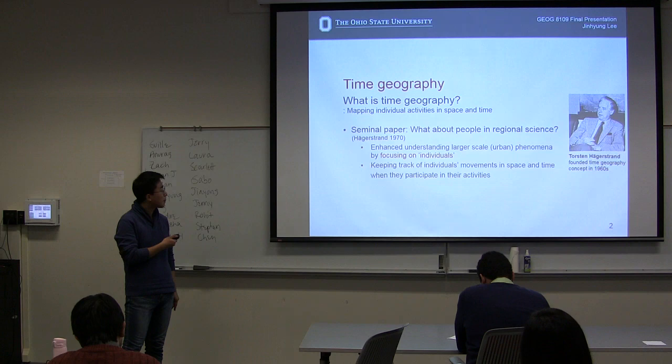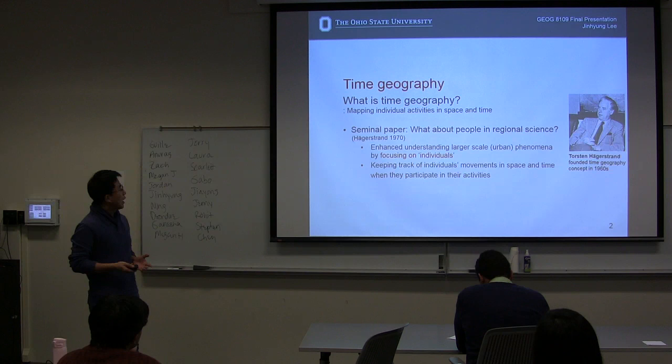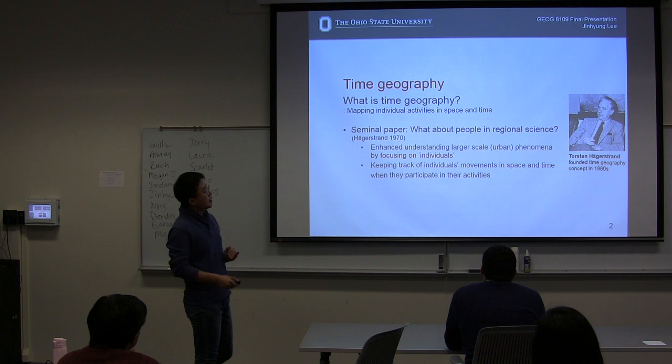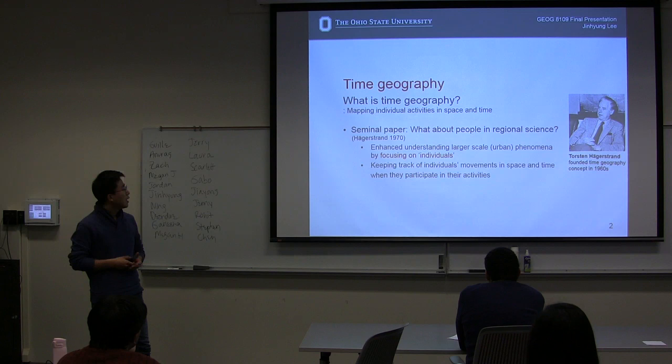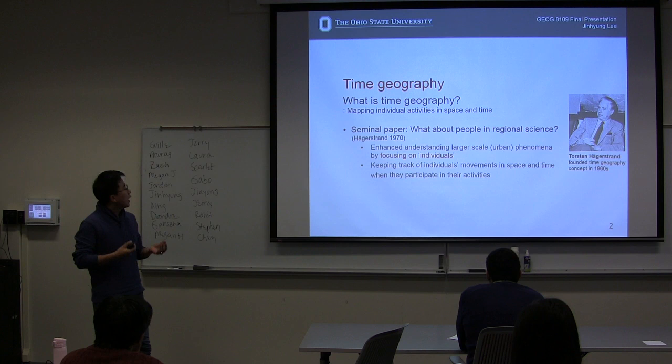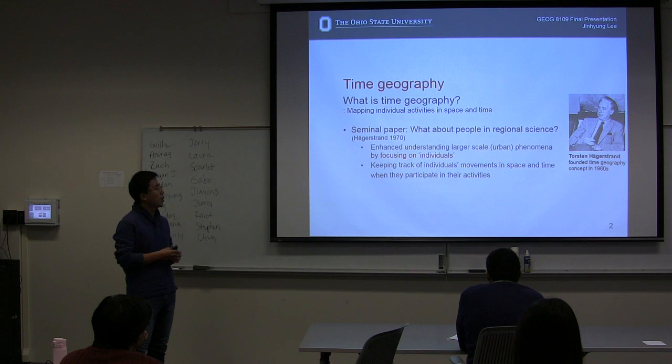Time Geography maps individual activities in space and time. This man, Torsten Hägerstrand, founded the Time Geography concept in the 1960s by introducing his seminal paper, 'What about people in regional science?' The Time Geography concept aims to get an enhanced understanding of larger-scale urban phenomena by focusing on individuals, as we can notice from the title, 'What about people?'